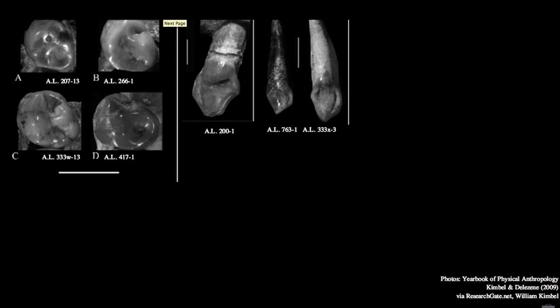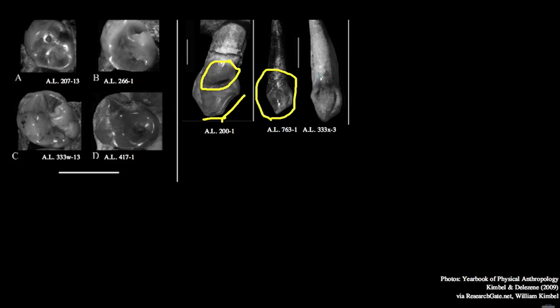Here are three maxillary canines from the Afar region. In the first image, you can see apical wear along the occlusal tip of the tooth, and also wear along the distal edge, reflecting that these canines are still relatively large and project somewhat above the surrounding teeth. There's also a well-developed distal tubercle — a derived characteristic with respect to earlier hominins and apes. Looking at the other two canines next to it, you can see tremendous size variability in canines from Hadar. Some of this variation may reflect sexual dimorphism — differences between males and females.